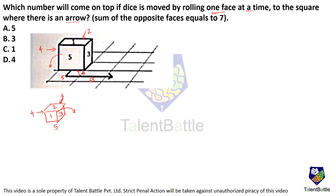So 3 is going to come at the bottom, and the dice is going to look like this: 3 at the bottom, 2 over here, and opposite is going to be 5. Now again when you roll, 2 is going to be at the bottom. So the opposite one has to be 5 — 5 is going to come at the top when the dice is rolled and brought up to the square where there is an arrow.